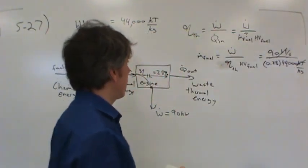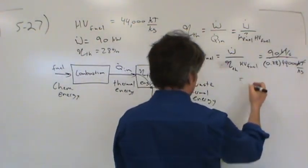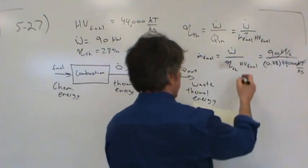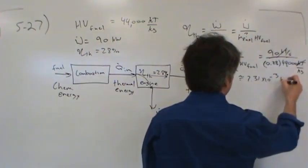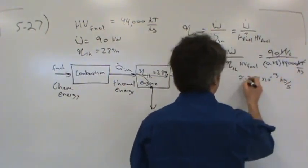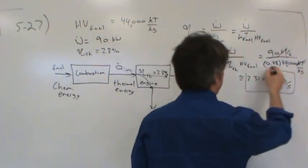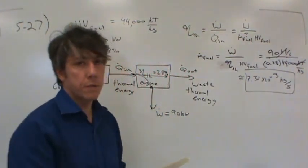This would be mass of the fuel flow over time. So when you plug it all into your calculator, you get about 7.31 times 10 to the negative third kilograms per second. There's the mass flow rate of the fuel. That's what we were asked to find. Questions?